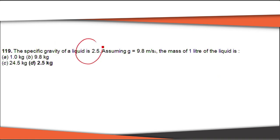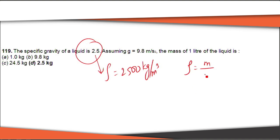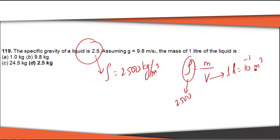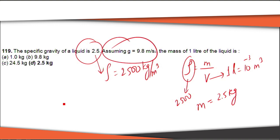The next question: specific gravity is 2.5, meaning density = 2500 kg/m³. How much is the mass of 1 liter of the liquid? Using ρ = mass/volume: density = 2500 kg/m³, volume = 1 liter = 10⁻³ m³. Mass = 2500 × 10⁻³ = 2.5 kg. The data g = 9.8 m/s² is obsolete and not required. The right answer is D.